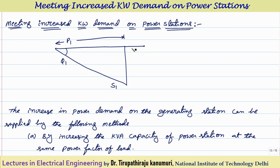In order to supply the same load — because load power factor will also be constant — one option is to increase the plant capacity such that it will meet the increased power requirement. That means S1 should increase to a higher value, so the power plant capacity must increase. But if you increase the extra capacity, automatically the cost increases.